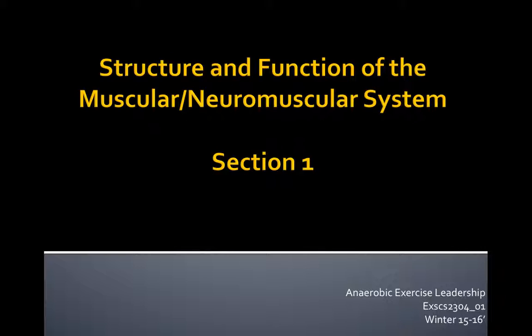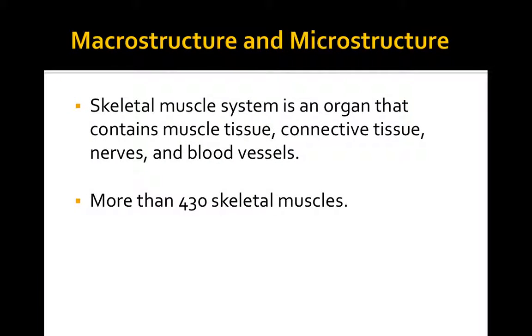We're on to the second portion of the course lecture. We're going to be talking about the structure and function of the neuromuscular system—basically the anatomy of the muscle and how muscle contractions occur. Last lecture we touched on coaching philosophy and the science of training and anaerobic activities, but now let's get into the nitty gritty. The skeletal muscle system is an organ that contains muscle tissue, connective tissue, nerves, and blood vessels.